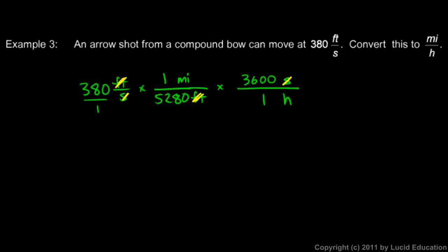That's how you can type it into your calculator. You can type 380 times 3,600 divided by 5,280. And you could do it directly left to right too, in this case. You could also do 380 divided by 5,280 times 3,600. Those will both give you the same result. And the result is 259 miles per hour, which is pretty fast. That's the speed of an arrow coming out of a compound bow.